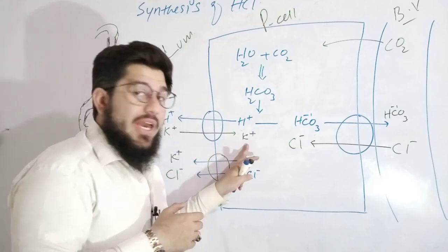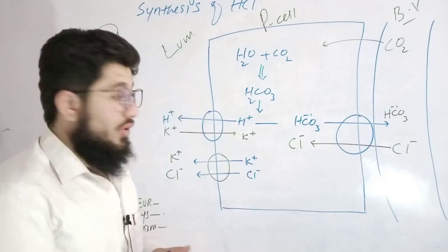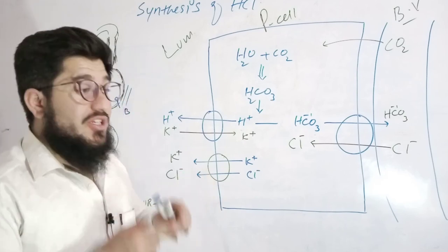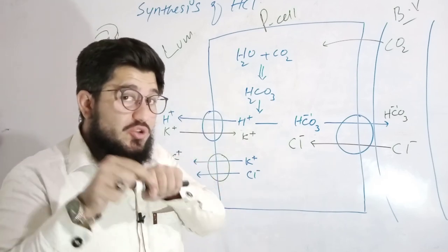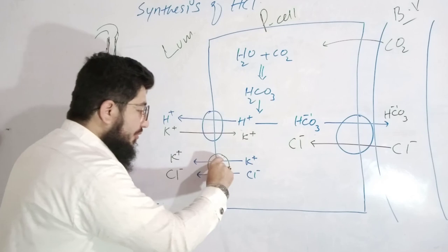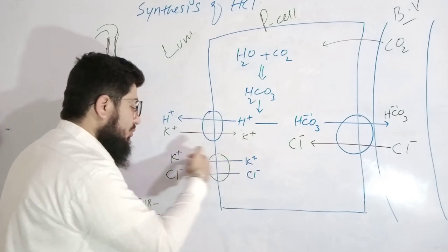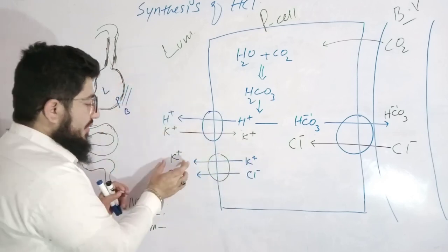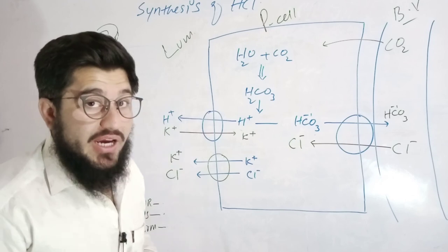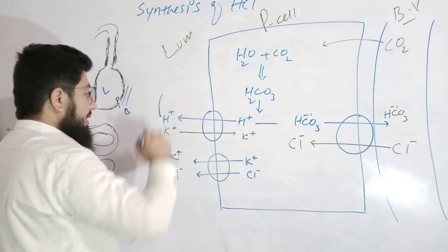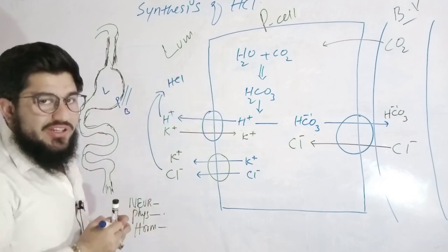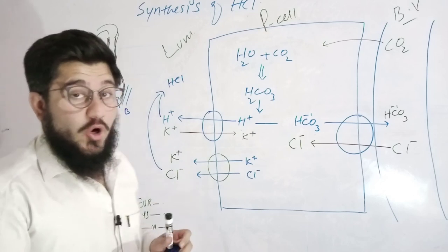At the end, we have K⁺ and Cl⁻ in the parietal cells. These two find a symport transporter, which moves them in the same direction — toward the lumen. So potassium and chloride move into the lumen via the symport transporter. In the lumen, we now have Cl⁻ and H⁺. These two interact to synthesize HCl. This is how hydrochloric acid is synthesized.